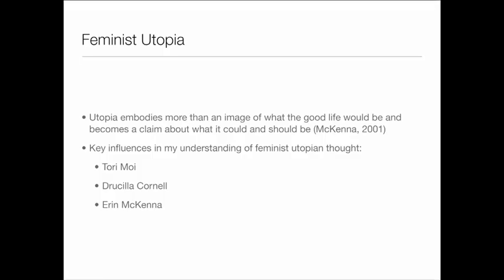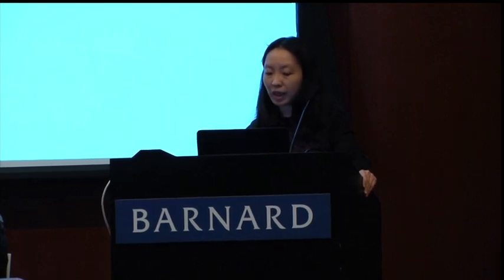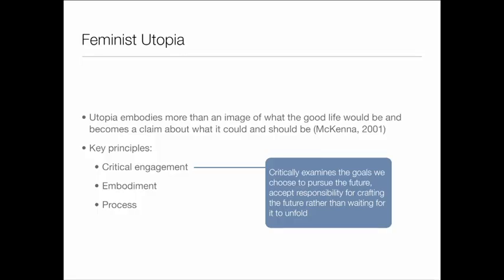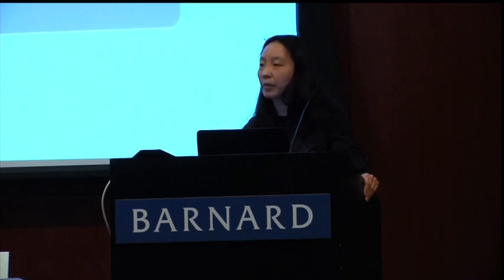A focus on the utopian has emerged in recent feminist research, most notably in the work by Moy, Cornell, and McKenna. Feminist utopia is about more than an image of what a good life would be, but becomes a claim about what it could and should be, according to McKenna. There are three key principles of feminist utopia. The first is about critical engagement with the world, which allows us to see new and more complex relationships between various aspects of existence. Accordingly, our horizons of experience can expand and the possibilities of the future become more numerous.